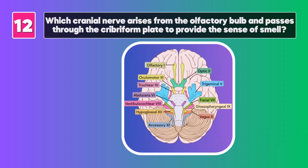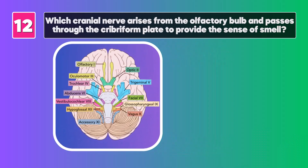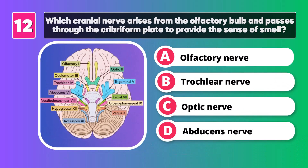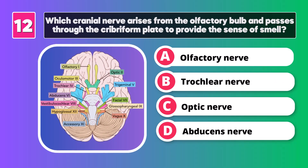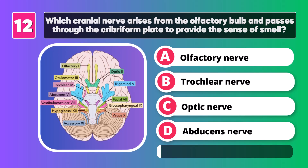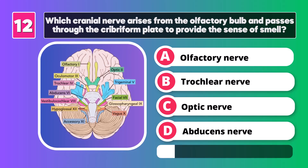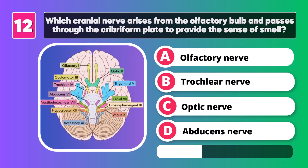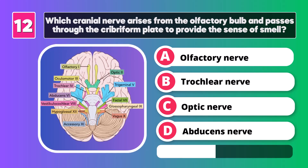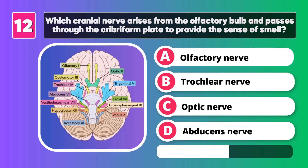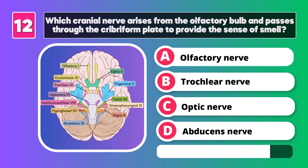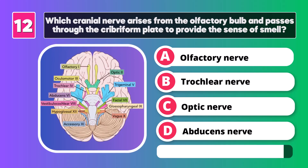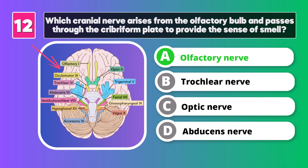Which cranial nerve arises from the olfactory bulb and passes through the cribriform plate to provide a sense of smell? Olfactory nerve.